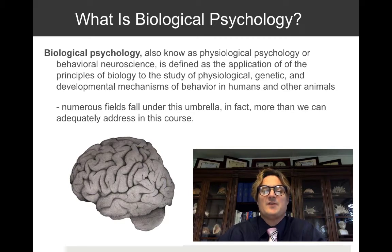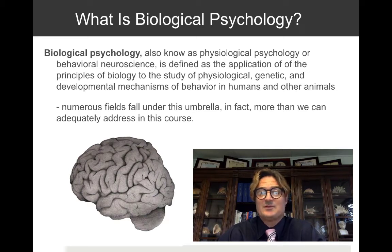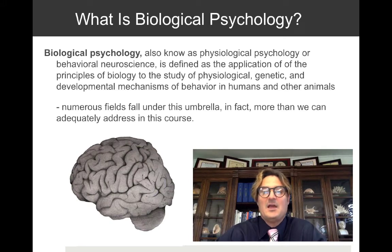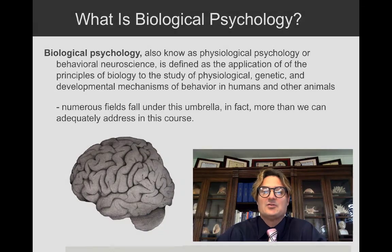Numerous fields fall under this umbrella — more than we can adequately address in this course. Neuroradiologists, neurologists, psychiatrists, clinical psychologists, researchers on artificial intelligence, cognitive neuroscience, paleontologists — there are so many different areas that fall under this broad umbrella we're going to refer to as biological psychology.